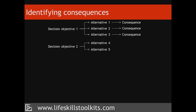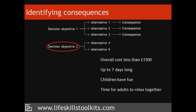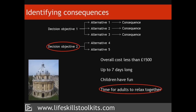As you build a list of consequences, check whether they fulfill the decision objectives identified in the O step of PROACT. The Petersens realize they haven't identified any consequences giving them time to relax together — one of their four decision objectives. In addition, you may find consequences that don't match any existing objective, which might suggest a new objective. For example, when considering the cottage in the Cotswolds, the Petersens find they could drive to Oxford and explore the city, revealing that a range of activities is one of their holiday objectives.